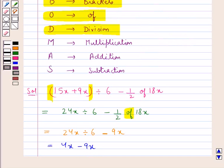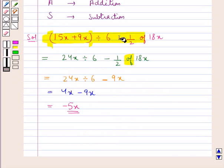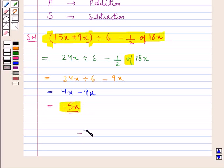In the next step we would do multiplication according to the BODMAS rule, but we don't have any multiplication to be done here. Neither do we have addition. Now we just do the subtraction. 4x minus 9x gives us minus 5x. So on simplifying this expression we get minus 5x, which is our final answer.